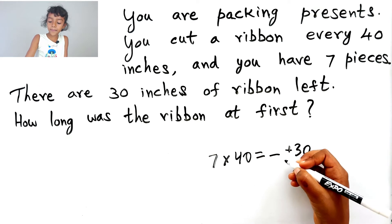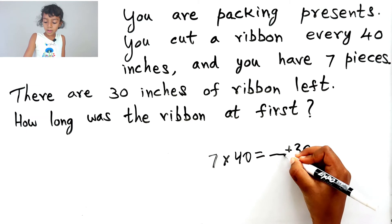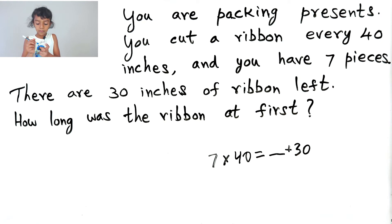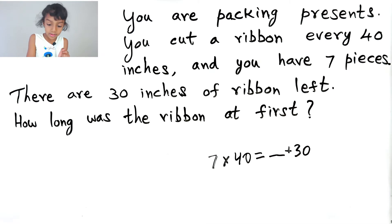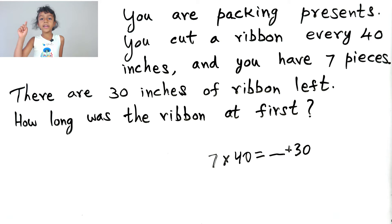So, that number's over here. Okay, let's find out first what the number is. So, 7 times 40. So, 40, 80, 120, 160, 200, 240, and 280. So, it's 280.